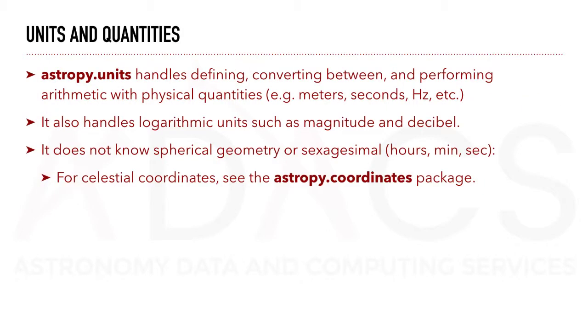AstroPy units handles defining, converting between, and performing arithmetic with physical quantities, for instance meters, seconds, hertz, etc. It also handles logarithmic units, such as magnitude and decibels. It does not know spherical geometry, or sexagesimal. For celestial coordinates, see the AstroPy.coordinates package.